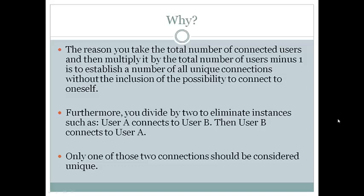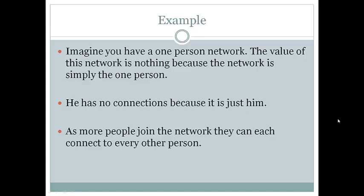The n times (n minus 1) is to establish the number of all unique connections, without possibility of connecting to yourself. You divide by 2 to eliminate any copies of connections, such as A to B and B to A. Only one of those connections is unique, so you have to eliminate one of those connections, thus divide by 2.